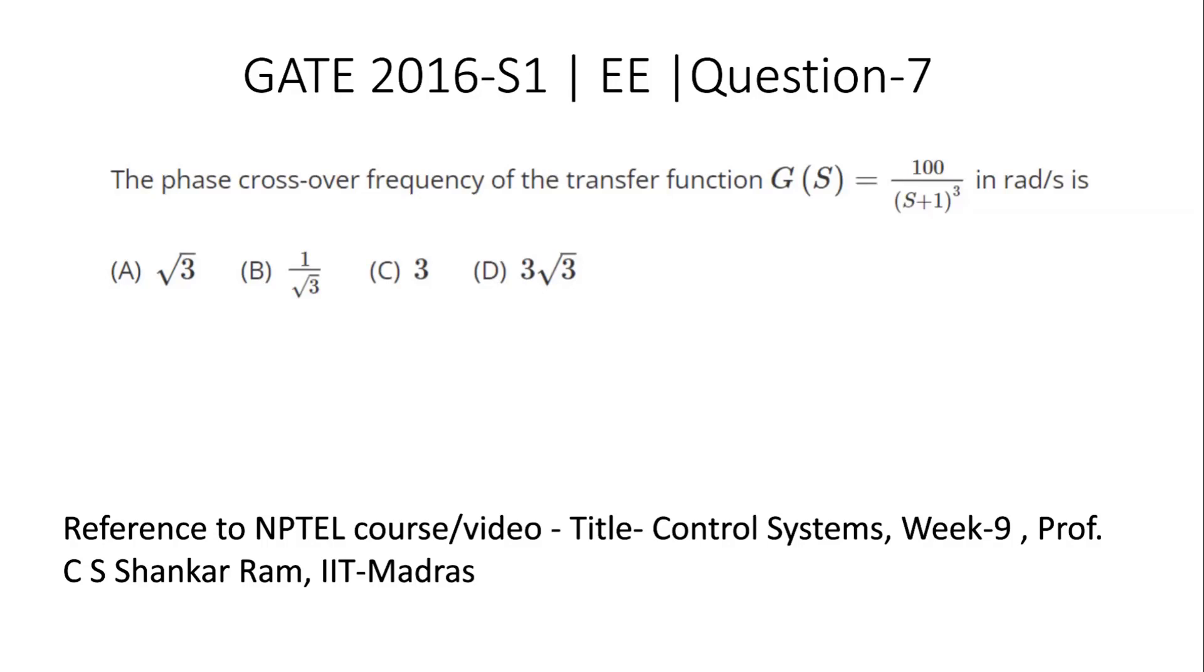Hello everyone. Today we will be discussing GATE 2016 Set 1 Electrical Engineering Question 7. The question asks: The phase crossover frequency of the transfer function G(s) = 100/(s+1)³ in radian per second is... and the options are given.